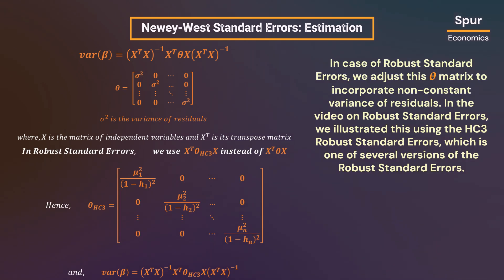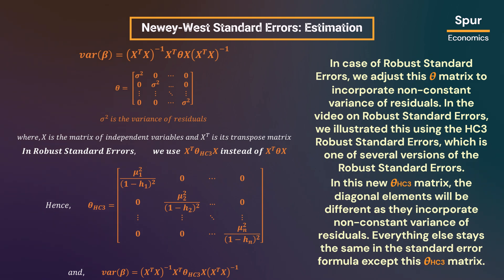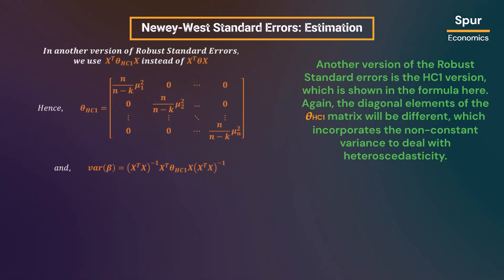In case of robust standard errors, we adjust this theta matrix to incorporate non-constant variance of residuals. In the video on robust standard errors, we illustrated this using the HC3 robust standard errors, which is one of several versions. In this new theta HC3 matrix, the diagonal elements will be different as they incorporate non-constant variance of residuals. Everything else stays the same in the standard error formula except this theta matrix. Another version is the HC1 robust standard errors, where again the diagonal elements of the theta HC1 matrix will be different, incorporating non-constant variance to deal with heteroscedasticity.